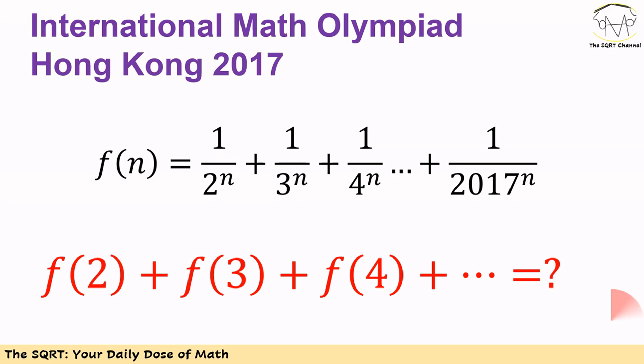In this problem we have a function f of n and it is written as 1 over 2 to the power of n plus 1 over 3 to the power of n plus 1 over 4 to the power of n so on so forth until 1 over 2017 to the power of n.